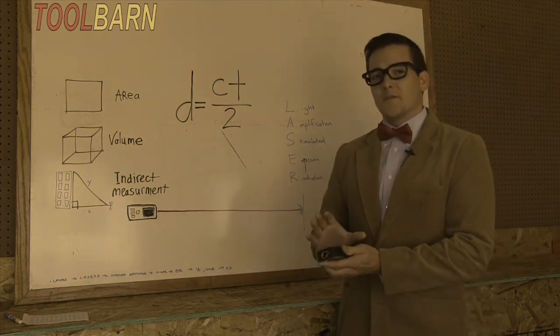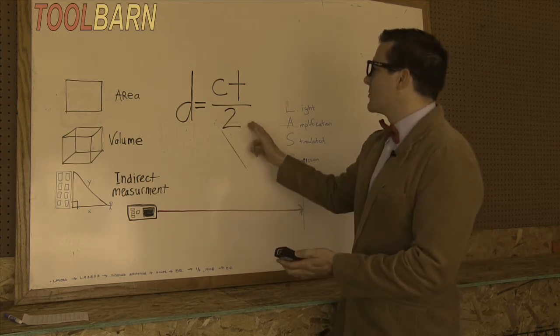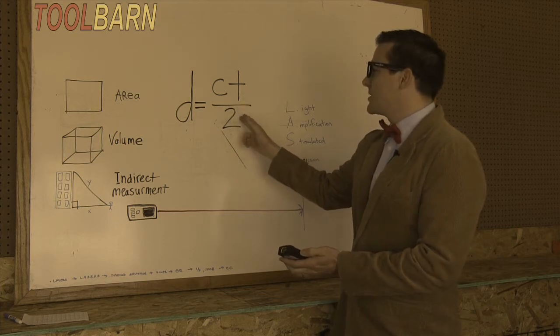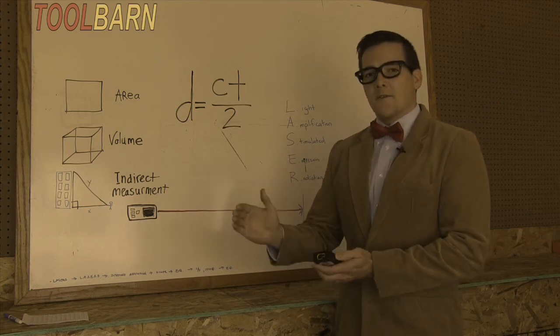There's actually an equation that this device uses to help measure the distance automatically. That's shown here on the board, where it's the time it takes the speed of light, or that laser, to travel to and from an object. So we divide by two, and that actually gives us the distance from that object.